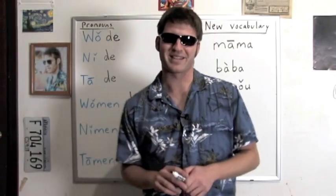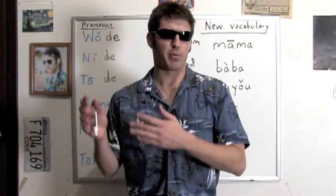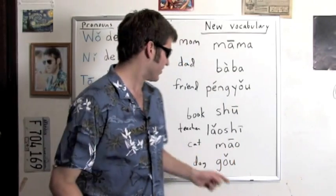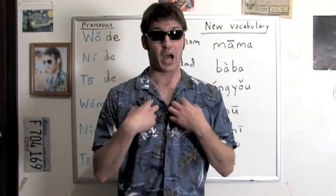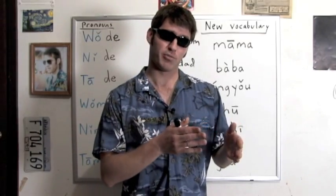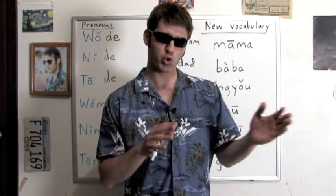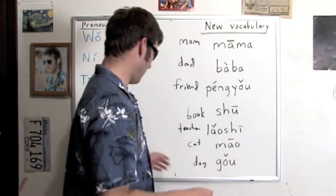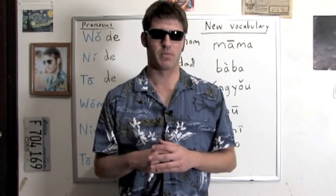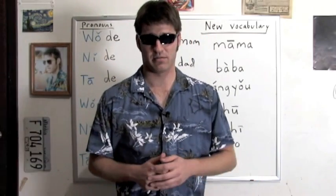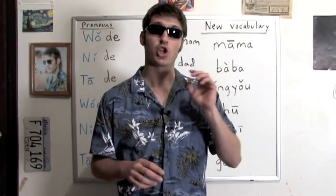If I turn it around and want to say 'the book is mine' instead of 'my book' — my book would be wǒ de shū. But for 'the book is mine': shū shì wǒ de. We don't have articles — no a, an, or the — just shū, book, is mine: shū shì wǒ de. The cat is mine: māo shì wǒ de. Or if I want to say 'the book is his': shū shì tā de. Or 'his book': tā de shū.